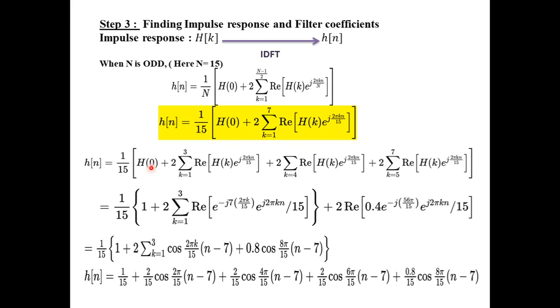Using that we can see that h of 0 plus 2 into from k equal to 1 to 3 we take it as real part of this. Next, for k equal to 4, it is a different value of h of k. So we are splitting the summation for k equal to 4 and then for 5 to 7. Obviously, we know that from 5 to 7, this term will become 0.